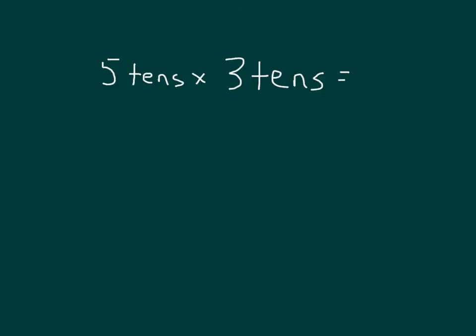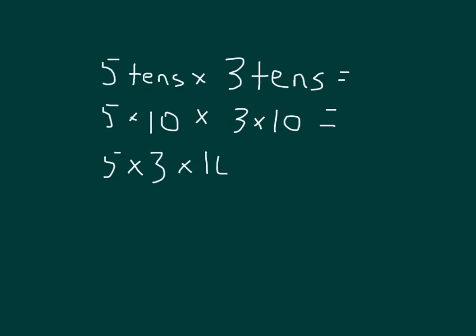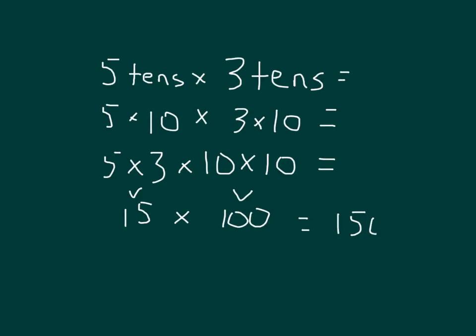Here we have 5 tens times 3 tens. It's the same as taking 5 times 3, which is 15, times 10 times 10. We know that 5 tens is 5 times 10, and 3 tens is 3 times 10. By the commutative property of multiplication, we can multiply the whole numbers first — 5 times 3 — then 10 times 10, which is 100. So we're talking about 15 hundreds, which is 1,500.